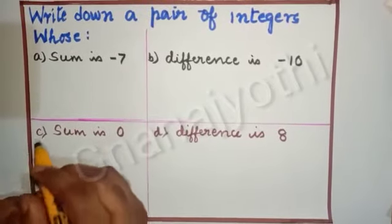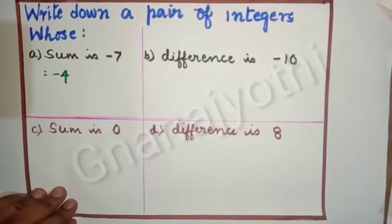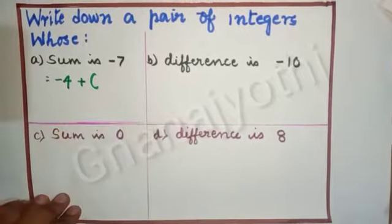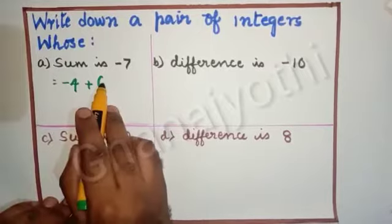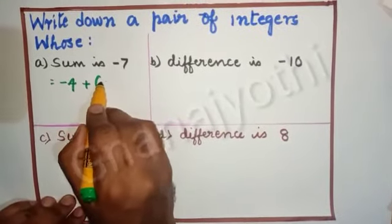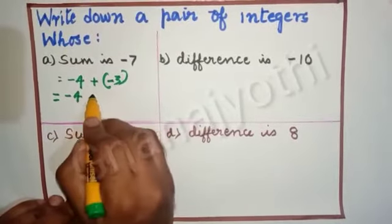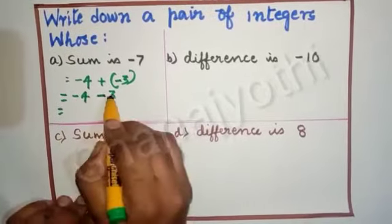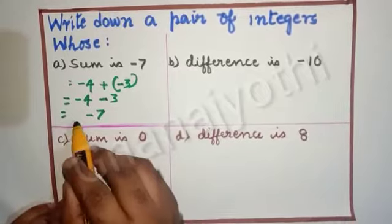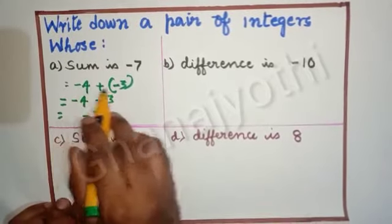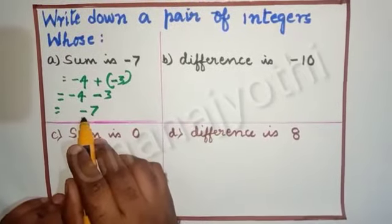So let us consider here. It is equal to minus 4. The signature for sum is plus. We need to get minus 7, so plus into minus gives minus. Therefore I will take minus 3. Now let us simplify: minus 4 plus into minus 3. When you add both, the sum you will get is minus 7. Hence, the required integers are minus 4 and minus 3. The sum of minus 4 and minus 3 is equal to minus 7.